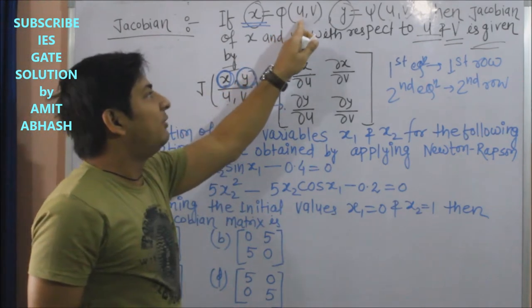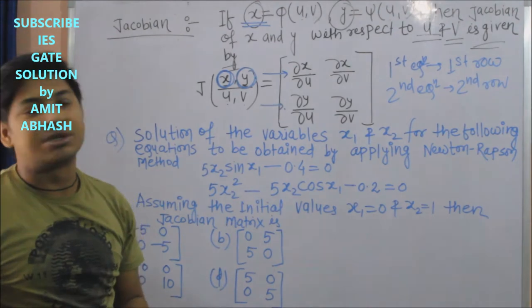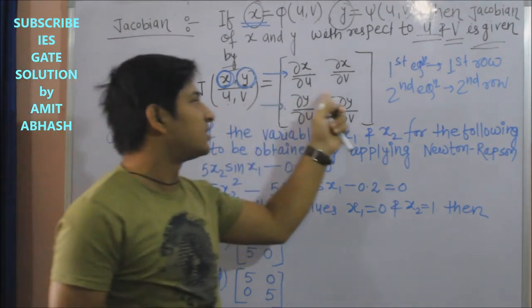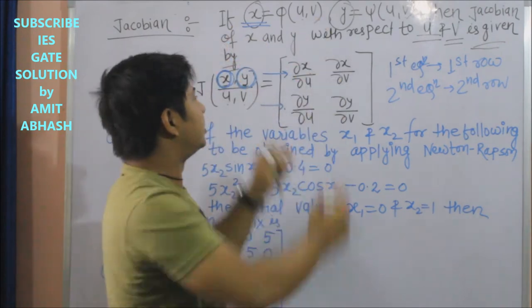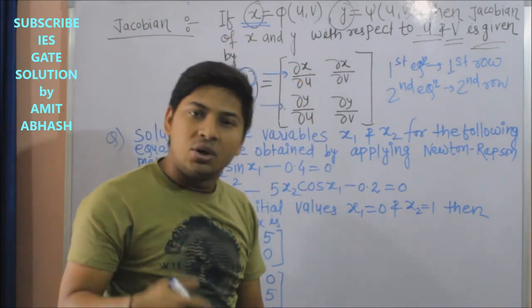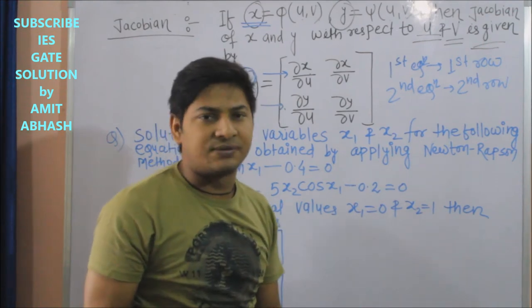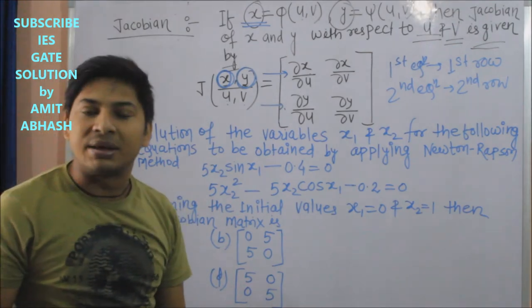Now, whatever variables are involved in that equation, you have to just partially differentiate it. So this particular equation, which is the complete equation, you have to differentiate with one variable and the other variable. And this matrix form is known as Jacobian matrix.